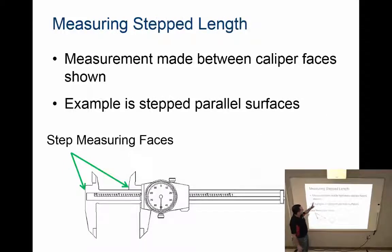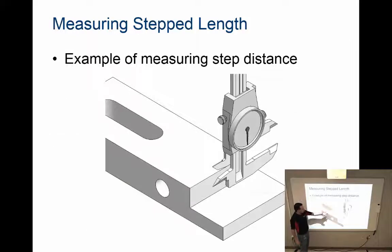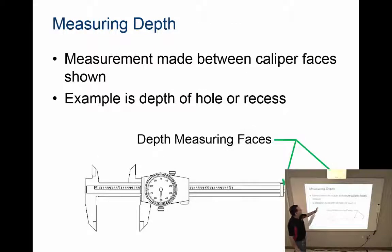The next one is step length, which is the difference between surfaces that are offset. This portion of the caliper is in front of the other one, and the step distance is the distance between this surface and here, again recorded the same way. It's pretty rare; most people would use the depth one to get this measurement.